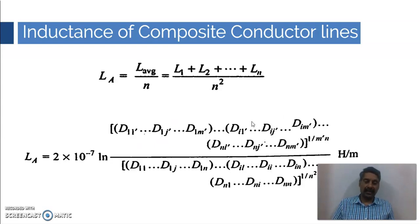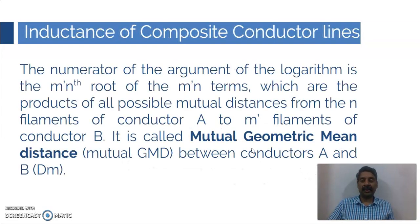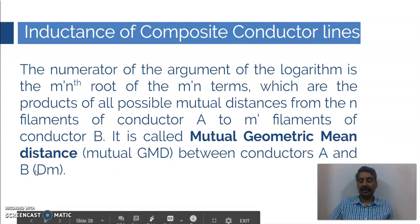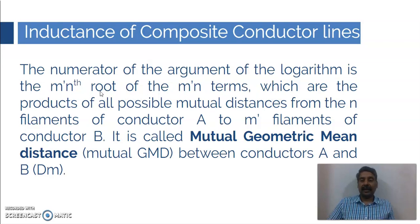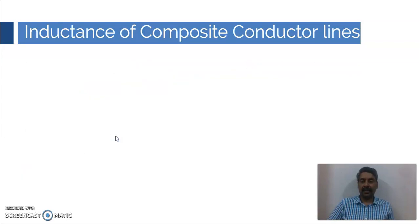There are m′ number of strands in conductor B and n number of strands in conductor A. Individual terms will have a product of m′ number of distances, and altogether there will be n number of such products. This we are going to define as mutual geometric mean distance — in short, mutual GMD — between conductors A and B, denoted as dm. It is the m′n root of the m′×n terms, which are the products of all possible mutual distances from the n filaments of conductor A to the m′ filaments of conductor B.